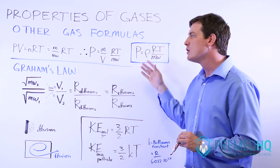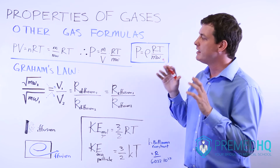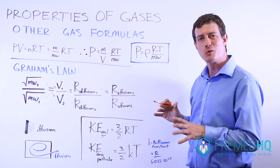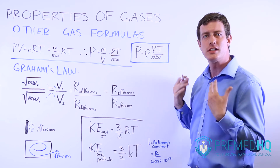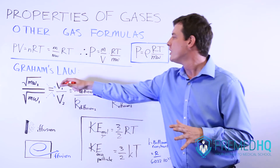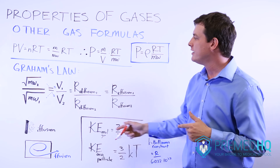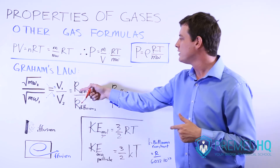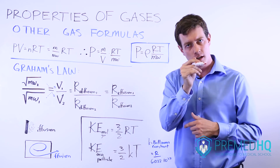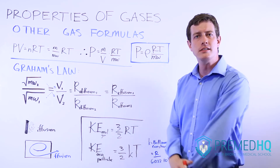These are some of the last gas formulas and concepts you'll be responsible for. Remember Graham's Law and the inverse proportionality of the square root of molecular weight — that's the trickiest part students get stumped by. The square root of molecular weight is inversely proportional to the rate of velocity, diffusion across space, and effusion through a small aperture from one environment into another.